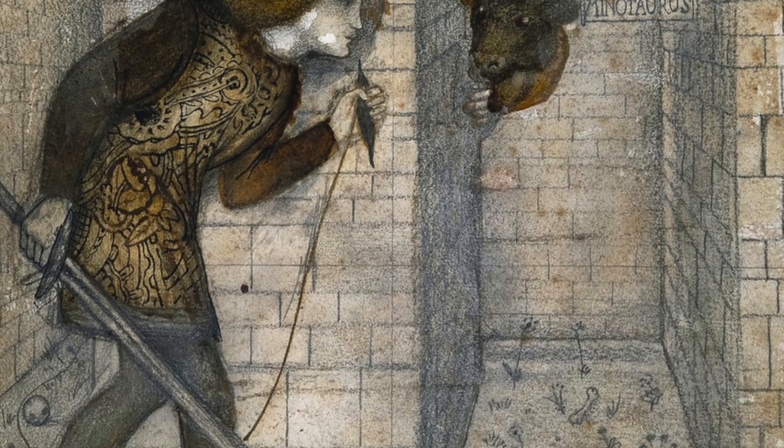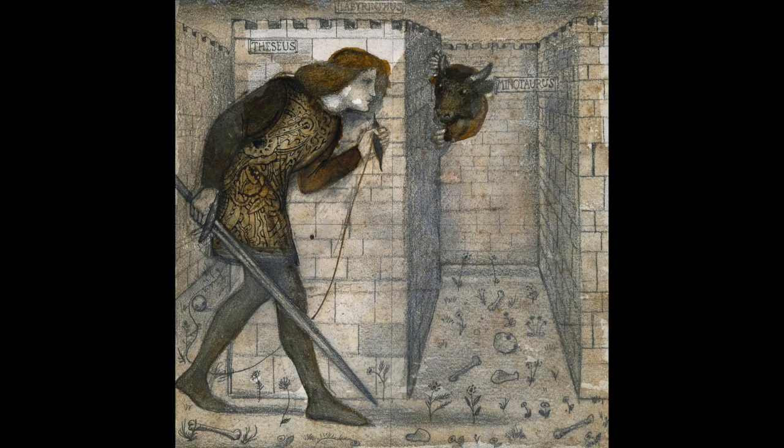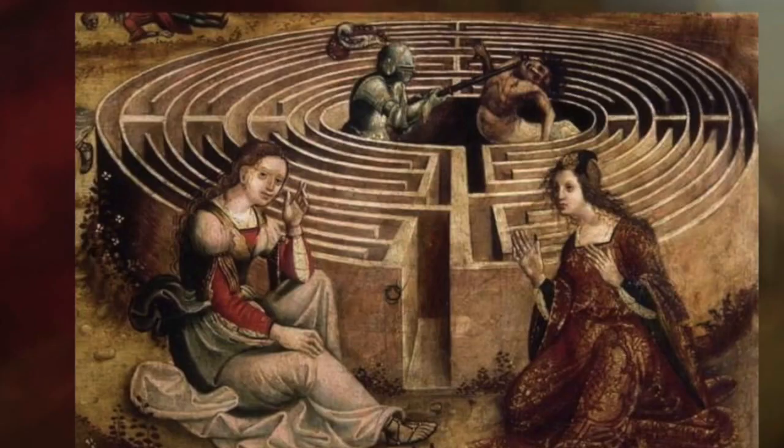Labyrinths are sometimes important settings for ancient myths. This Greek myth about Theseus has him walking into a labyrinth to kill the minotaur creature. In order to not get lost, he used string and tied it to the entrance of the labyrinth. As he walked through the labyrinth, he unwound the string. After killing the minotaur, he simply followed the string so he wouldn't get lost and he found his way out.